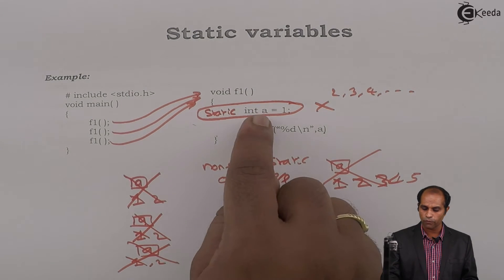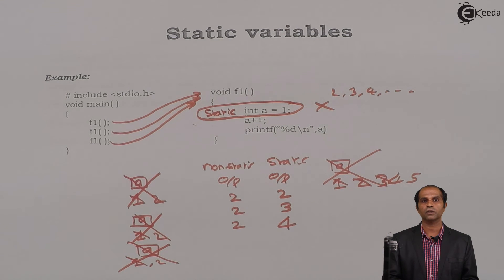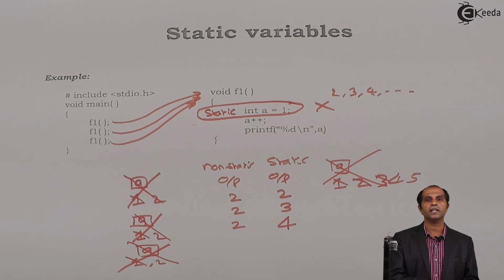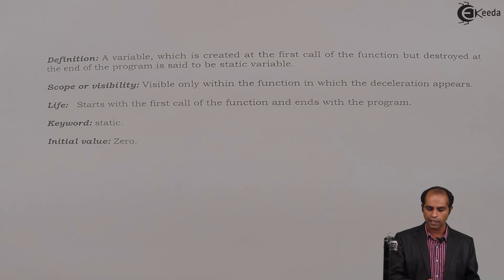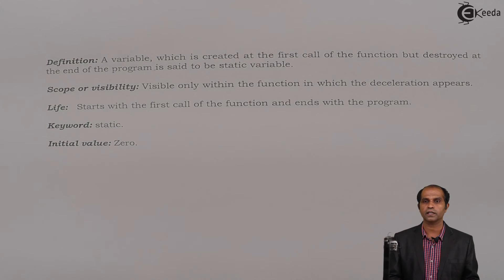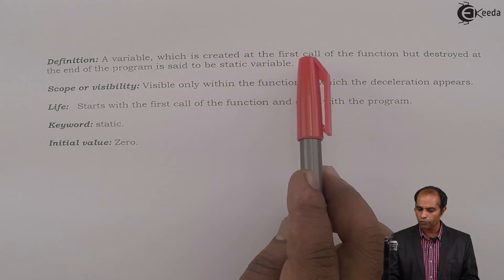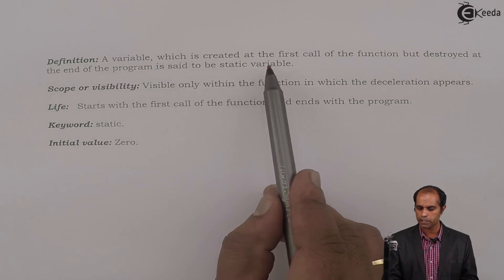Life starts with the first call to the function and ends with the program. Visibility is only to the function in which the declaration appears, and the keyword is static. If not initialized to 1, A would default to 0. Definition: a variable which is created at the first call of the function but destroyed at the end of the program is said to be a static variable.